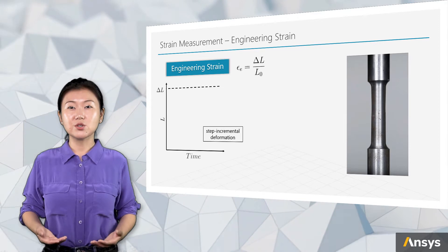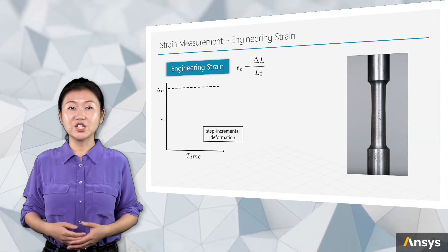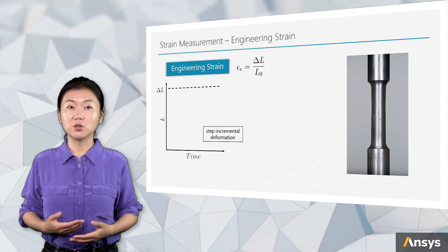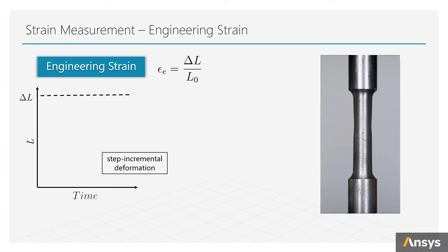For engineering strain, there is the assumption that for each step during deformation, the change of deformation is uniform, which forms the step incremental deformation. Let's see here, for first small step, change of length is delta L1 for the entire step. It drops from zero to delta L1 sharply and remains as a flat line for first step. The strain value for now is delta L1 over L0.